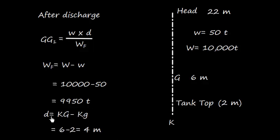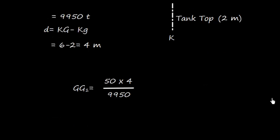In case of discharging, the D is KG of the ship and KG of the weight, which is 6 meters. KG of the ship and KG of the weight is 4 meters, so we get this equal to 4 meters. Now we need to just put these values: GG1 is equal to 50 into 4 divided by 9,950.